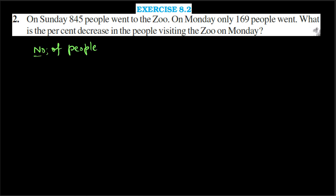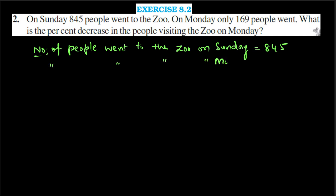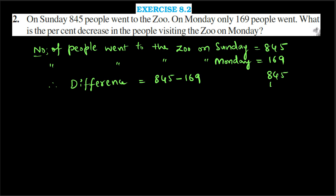Number of people who went to the zoo on Sunday equals 845. Number of people who went to the zoo on Monday equals 169. Therefore, difference equals 845 minus 169. Subtracting: 5 minus 9, borrow, 13 minus 6 is 7; 13 minus 6 is 7; 7 minus 1 is 6. So the difference is 676. This is the decrease in the number of people from Sunday to Monday.